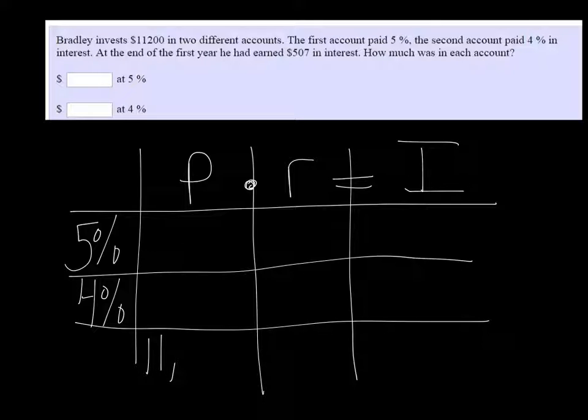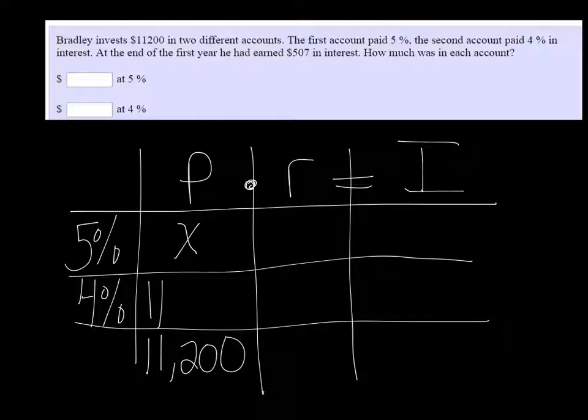We know that he put a total of $11,200 into both of the accounts. But we don't know how much went into each one. So if we just say that he put X in the 5% account, then the 4% account would have gotten $11,200 minus X.